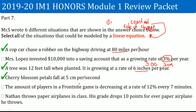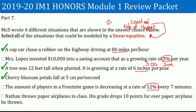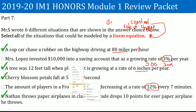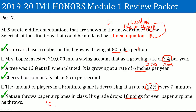The amount of players in Fortnite decreases at a rate of 12% every 7 minutes. Because it is a percentage, the rate of change is not constant — this is not linear. Nathan throws paper airplanes and his grade drops 10 points for every airplane thrown. One airplane is 10 points, two is 20, three is 30 — this is a consistent common difference of 10, so it is linear.